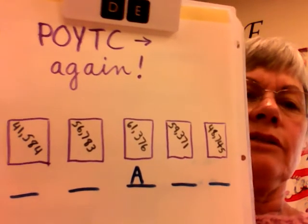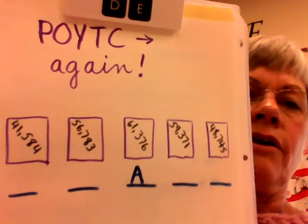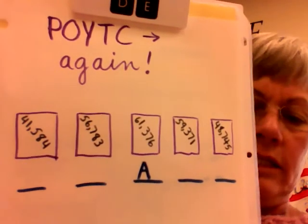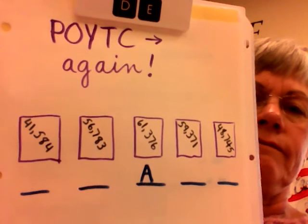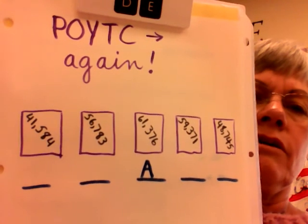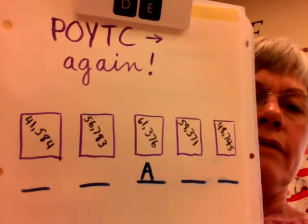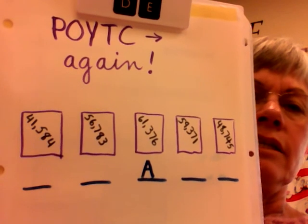Second clue. Card B has the least number. Card B has the least number.